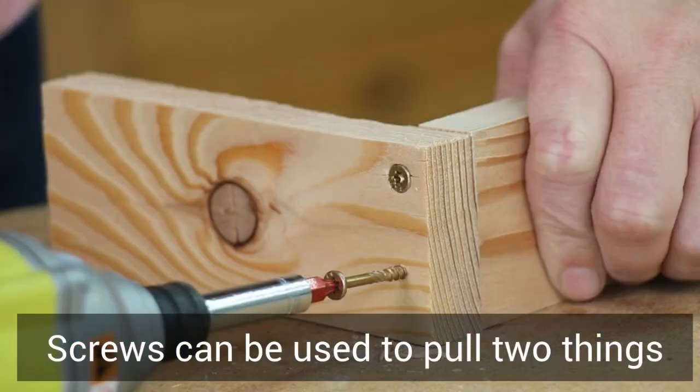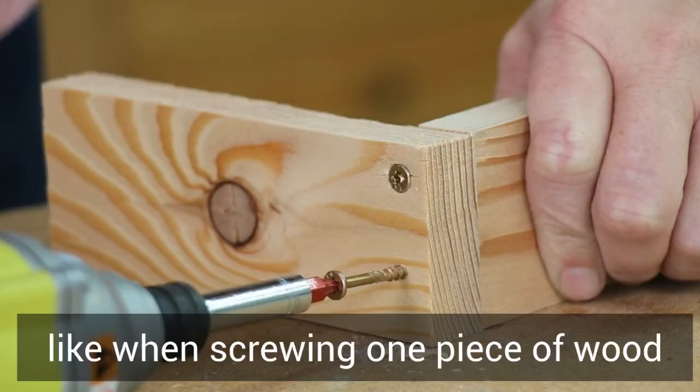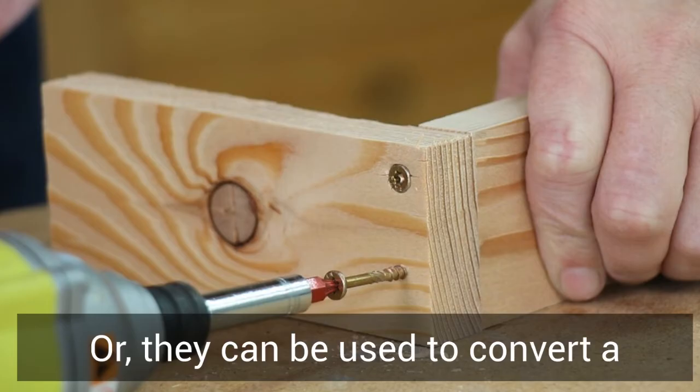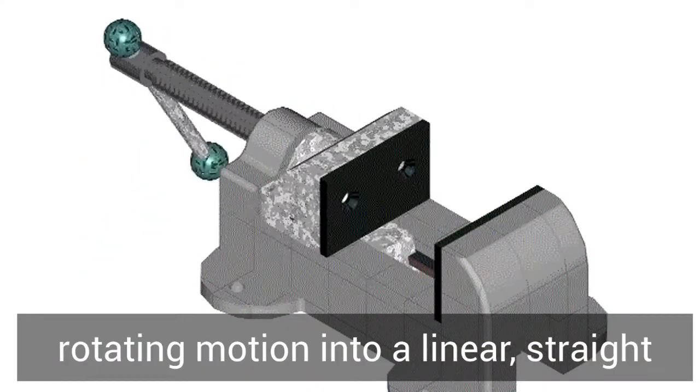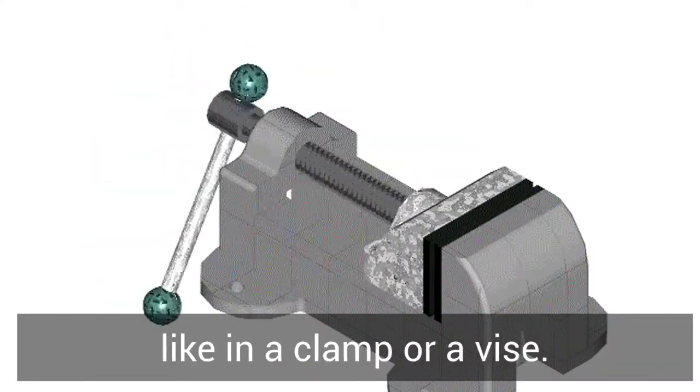Screws can be used to pull two things tightly together, like when screwing one piece of wood into another, or they can be used to convert a rotating motion into a linear straight line motion, like in a clamp or a vice.